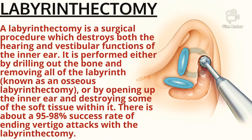The second surgical option is a labyrinthectomy. As seen in the picture, a labyrinthectomy is a surgical procedure which destroys both the hearing and vestibular function of the inner ear. It is performed either by drilling out the bone and removing all of the labyrinth, known as an osseous labyrinthectomy, or by opening up the inner ear and destroying some of the soft tissues within it. There is about a 95% to 98% success rate for ending vertigo attacks with labyrinthectomy.